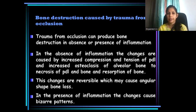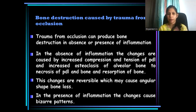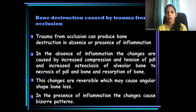How does bone destruction occur just with trauma from occlusion? Trauma from occlusion produces compression of periodontal ligament — compression and tension in the periodontal ligament area — resulting in activation of osteoclasts, thereby producing necrosis of periodontal ligament as well as resorption of alveolar bone. However, the bone loss caused by trauma from occlusion is reversible to a certain extent.